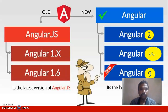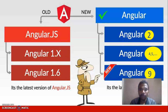The initial version of Angular is AngularJS, that is Angular 1 to 1.6. After that Angular was reintroduced starting from Angular 2 for some technical purposes. Angular 3 is missing, and Angular 4, 5, etc. followed. Now we are at the latest version, Angular 9.